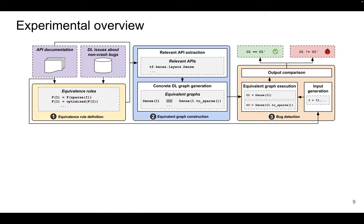Now let's take a look at the overview of EGLE. EGLE consists of three main steps. First, we define generalizable rules for creating equivalent graphs. Second, for each rule, we obtain applicable APIs by checking deep learning API documentation and build pairs of concrete equivalent graphs. Finally, we execute the two equivalent graphs by feeding them fuzzed input, and we compare their output to detect inconsistency bugs.